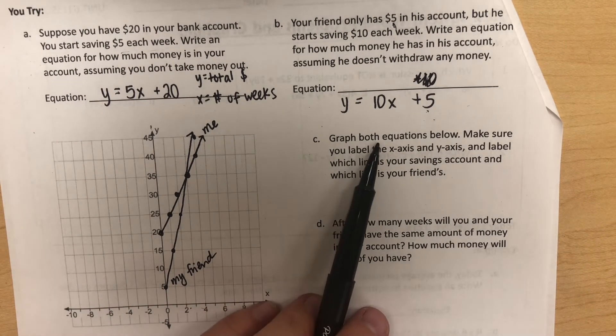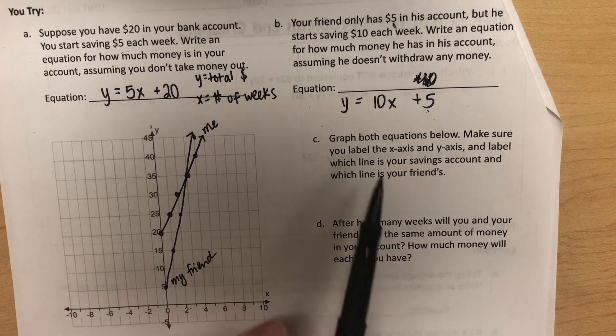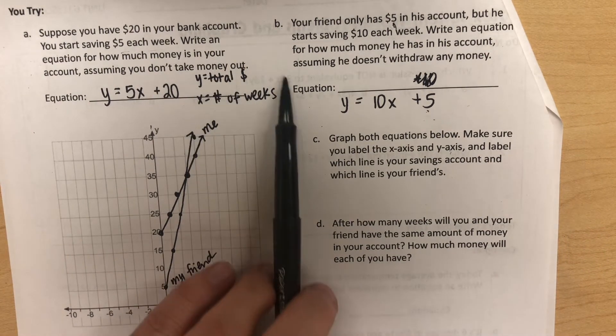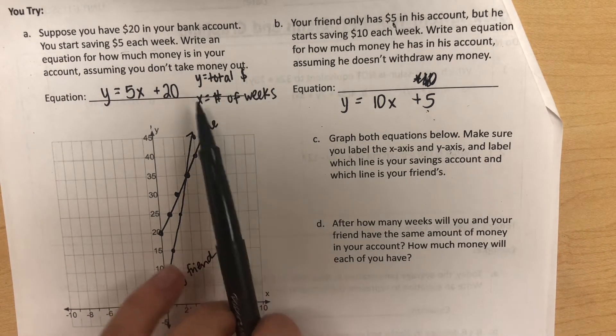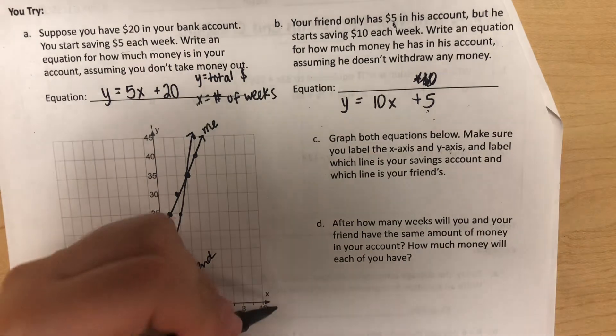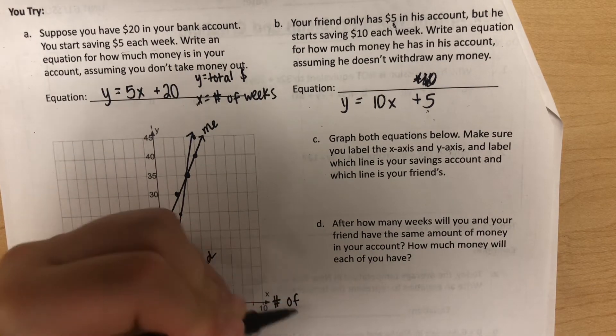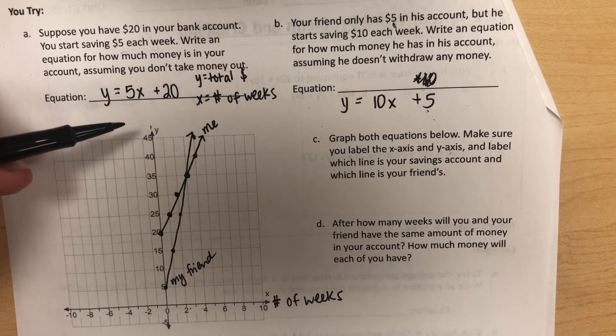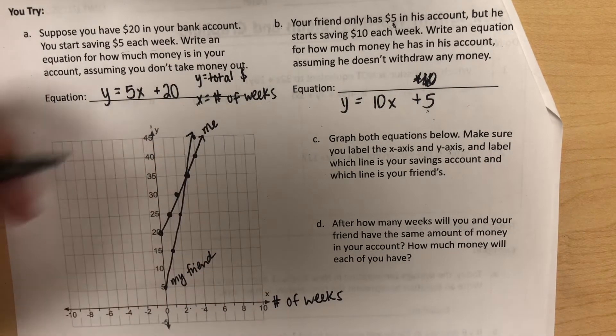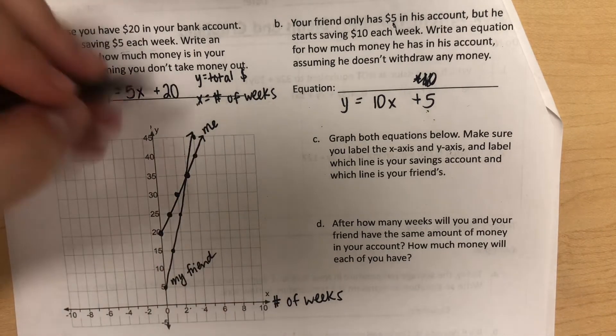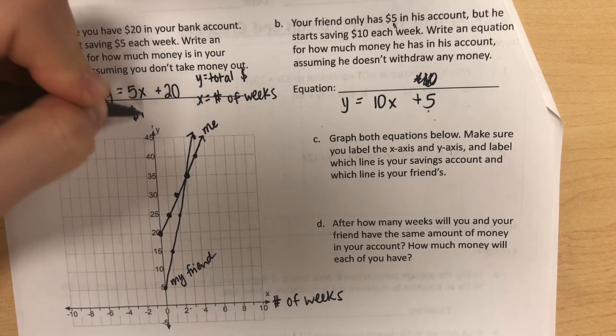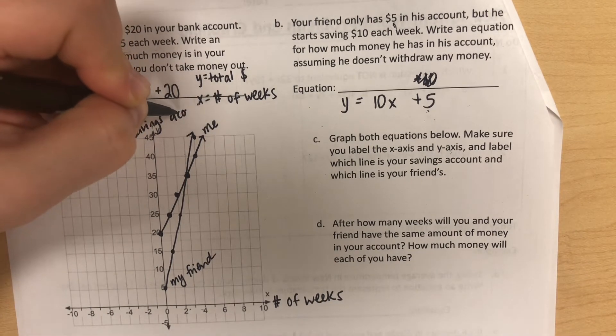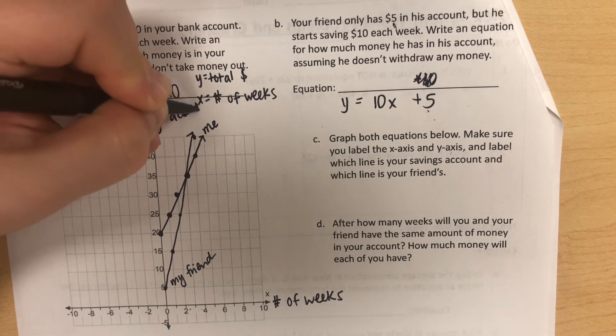If I come back to the question, it says graph both equations—we did that. It says make sure you label your x and y axes. I haven't done that yet, but it's easy if you've already defined your variables. X is the number of weeks, so I'll write 'number of weeks.' And then Y is our total amount of money, so I'll label it 'money in savings account.'